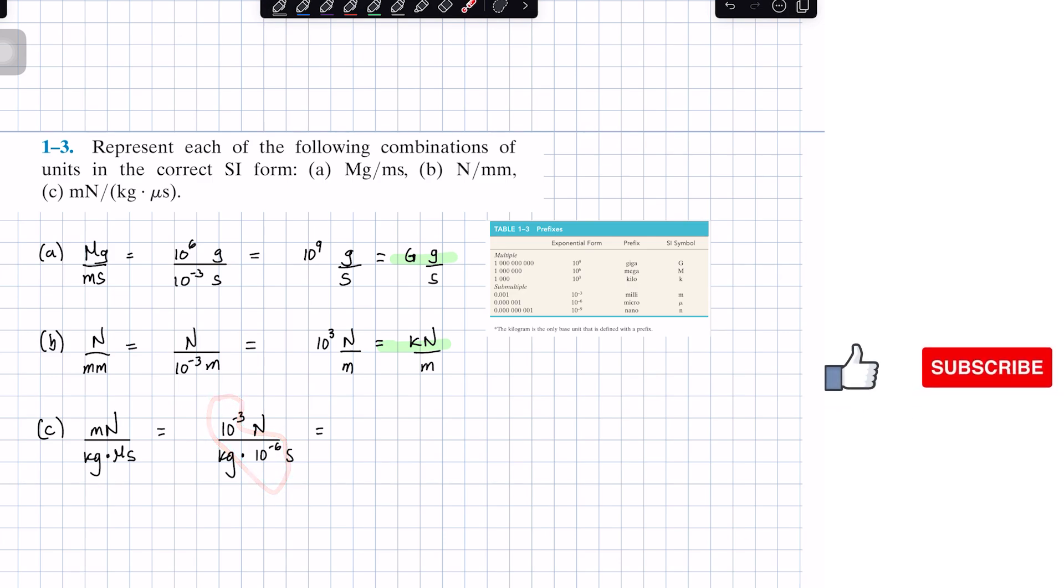When we add these exponents, it becomes 10 to the positive 3 Newton over kilogram times second. Again, we put it back into prefix form. 10 to the positive 3 is kilo, so we got kilonewton over kilogram times second. Just like that, we found the solution for problem C as well.